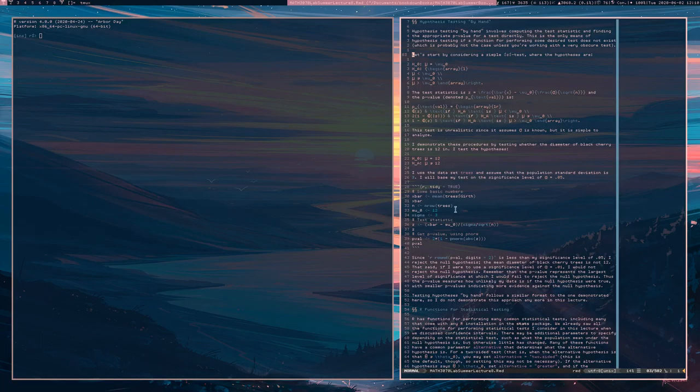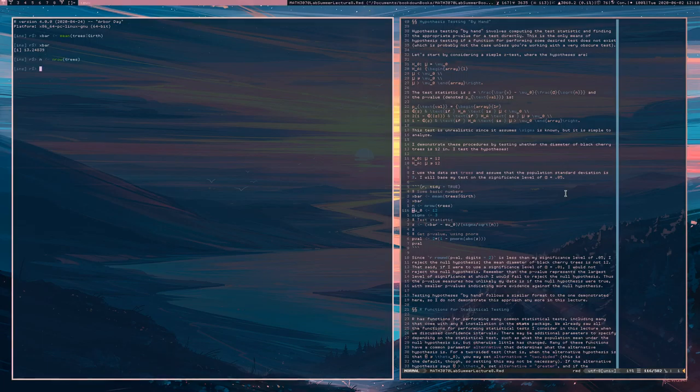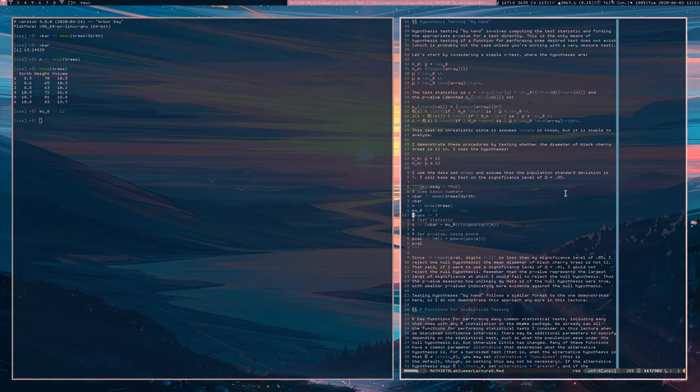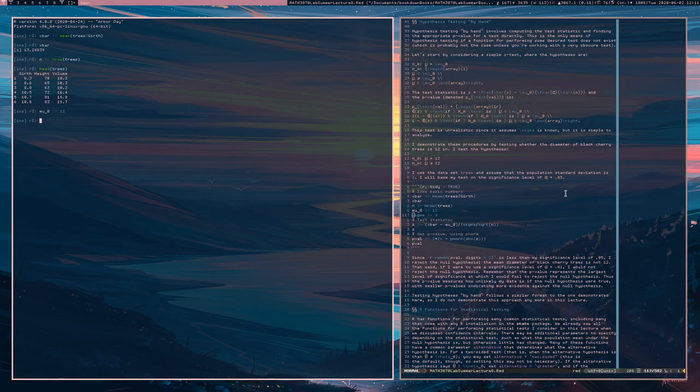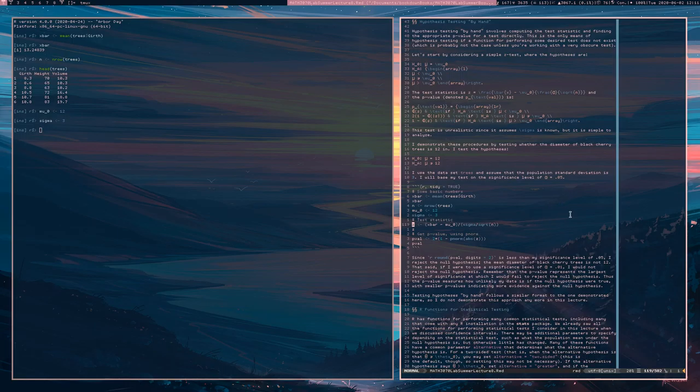All right. So here's what I'm going to do. I'm going to compute the sample mean of the tree's girth. Here's what the sample mean is. The sample size is going to be N row of this tree's data frame. So if we look at trees, this is what it looks like. All right. So the null hypothesis says that the mean is 12, so mu naught will be 12. Sigma is going to be 3.